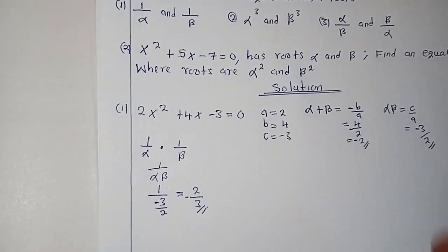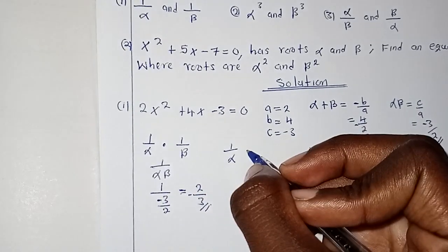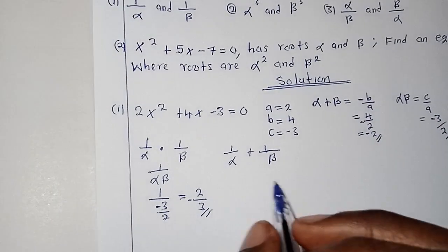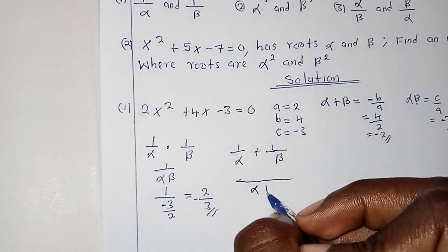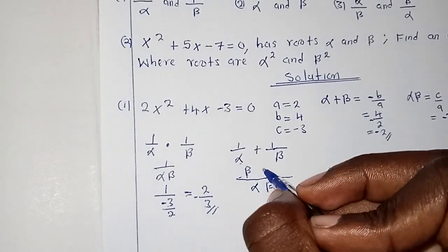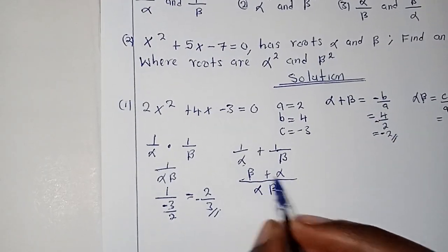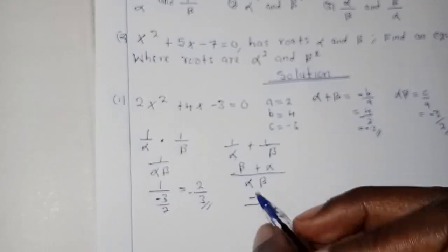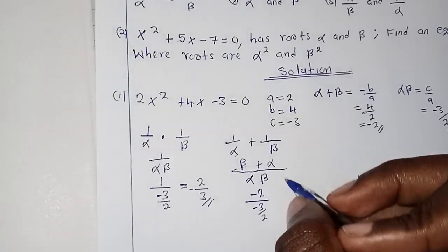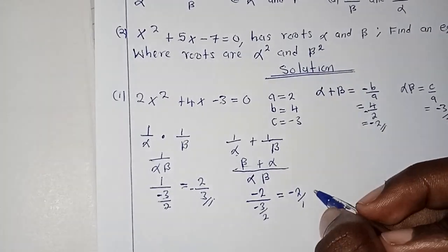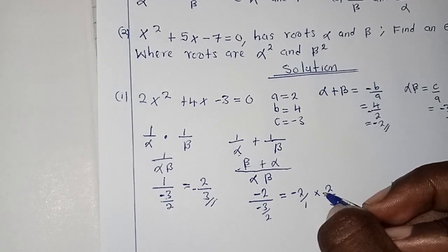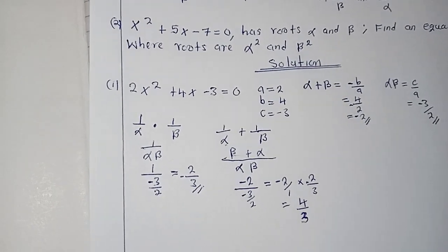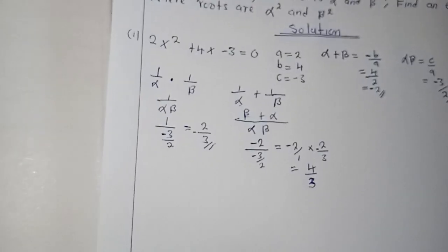For the sum of the new roots: 1 over alpha plus 1 over beta. Finding the common denominator, this becomes (beta plus alpha) over (alpha-beta). The sum alpha plus beta was negative 2, and the product alpha-beta was negative 3 over 2. So this is negative 2 divided by (negative 3/2), which equals negative 2 over 1 multiplied by 2 over 3, giving us 4 over 3.